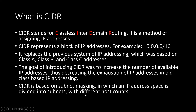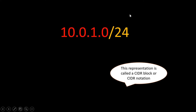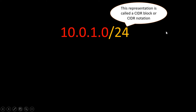CIDR is based on subnet masking, in which an IP address space is divided into subnets with different host counts. You might have seen a CIDR block like 10.0.0.0/24. This representation is called a CIDR block or CIDR notation.